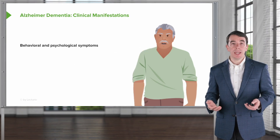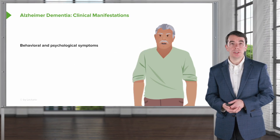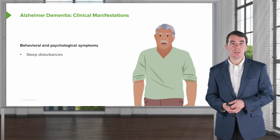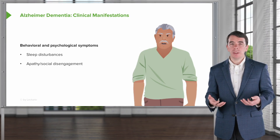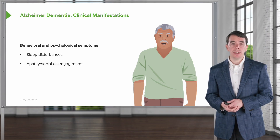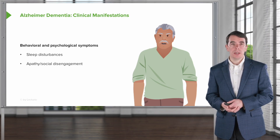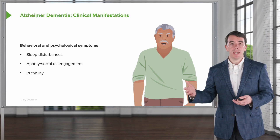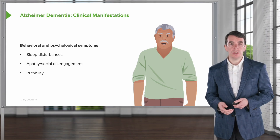We can see behavioral and psychological symptoms including sleep disturbances, apathy — or just lack of interest and motivation — social disengagement, and irritability, particularly in advanced stages of the disease.